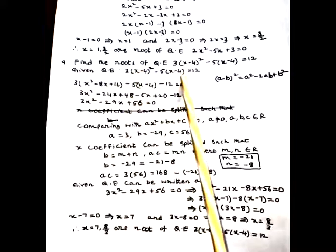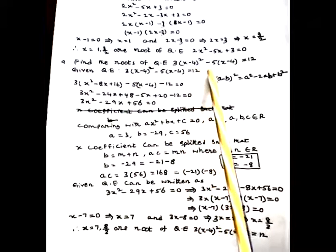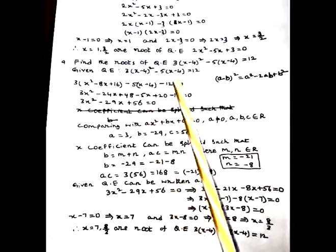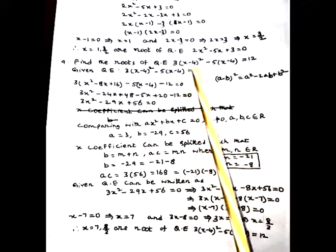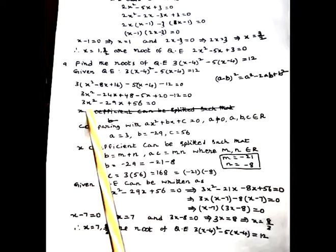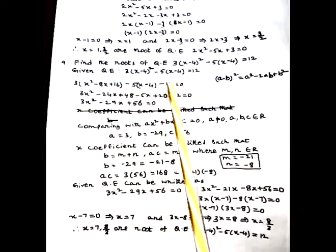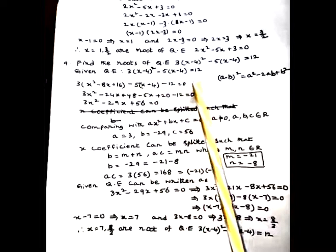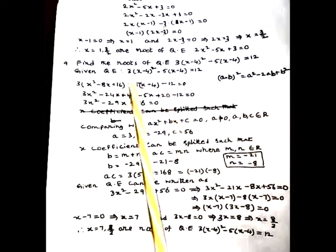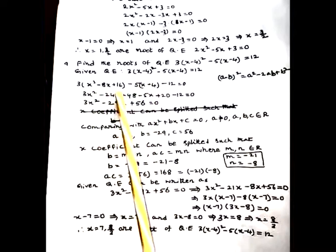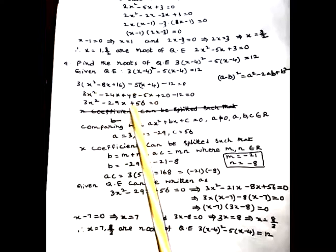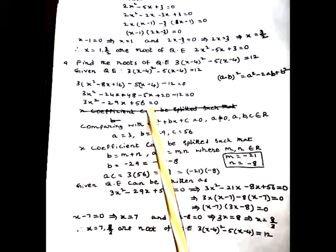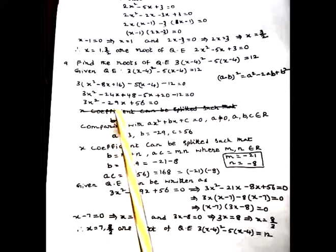Find the roots of 3(x - 4)² - 5(x - 4) = 12. This problem can be solved by two methods. Method 1: expanding the given terms. Using the formula (a - b)² = a² - 2ab + b², we expand (x - 4)² = x² - 8x + 16. Simplifying, we get 3x² - 29x + 56 = 0.